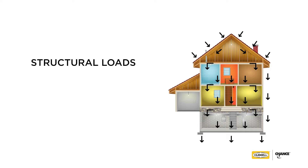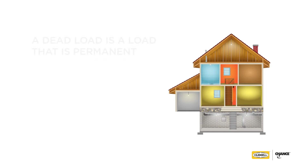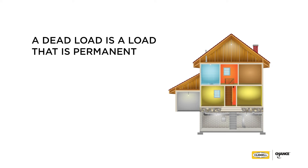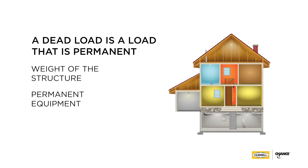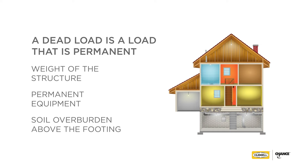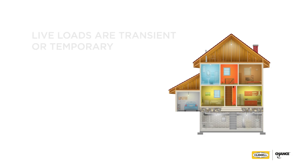Loads are divided into two categories: dead loads and live loads. A dead load is a static load and is generally assumed to be constant over the life of the structure. Dead load can be calculated with some certainty. Examples of dead loads include the weight of the structure, permanent equipment, and the soil overburden above the footing.